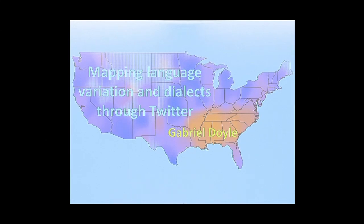To start off this session, the previous speaker talked about using Twitter to look at what's behind what people are tweeting about — when are they sick, when are they worried about the flu. What I'm doing is actually looking at the tweets themselves to find out what they're telling us about how people speak. I'm trying to map language variation and dialect geography — who says what where within different forms of English.